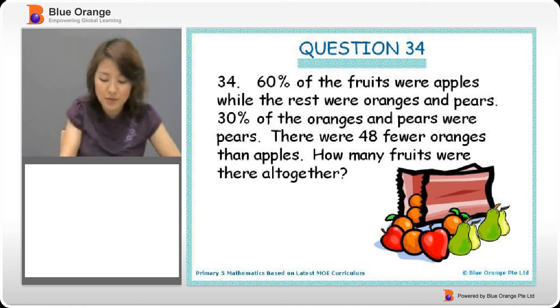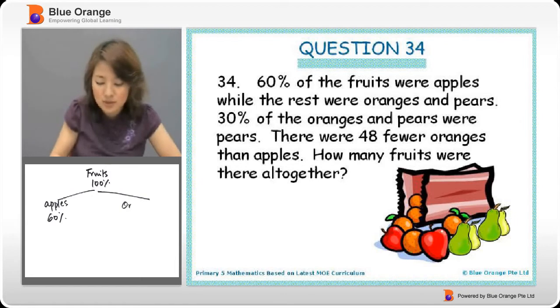First of all, we have fruits, which is 100%. Of this 100%, we are going to break it into apples, which take up 60%. So the oranges and pears will be 40%.